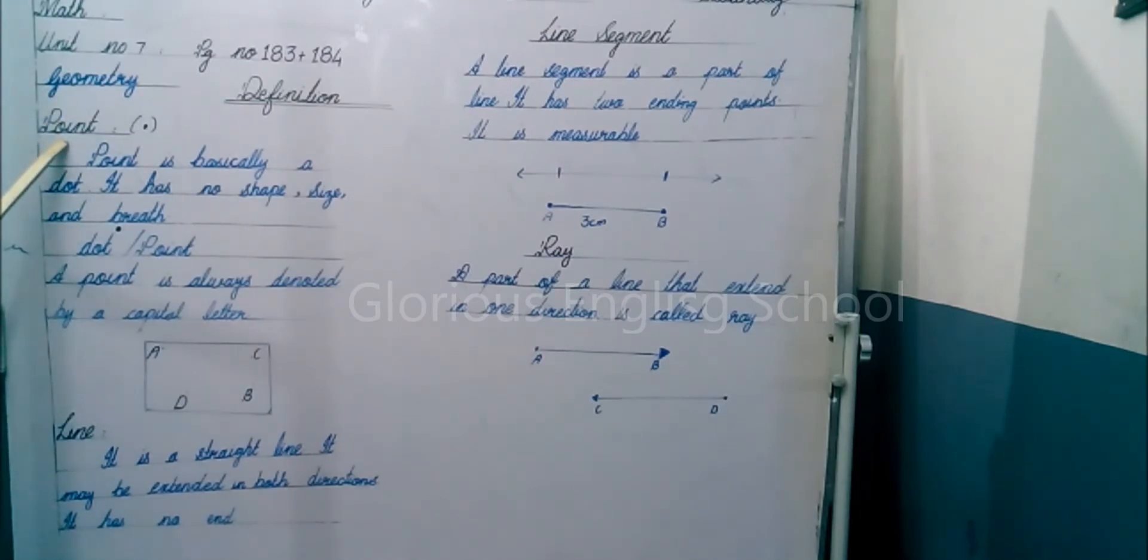You have point, line, line segment, and ray. First, we will study geometry. Geometry is made of two words: geo means earth and metry means measure.